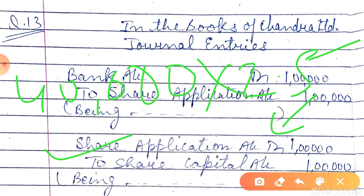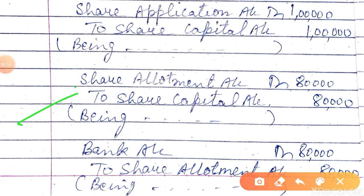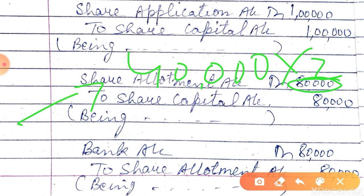We are dealing with the same entries, that's why I am solving these kinds of questions again. The next entry — tell me quickly — is share allotment account debit to share capital account. The amount ₹80,000 came from 40,000 shares into ₹2 each, so this is ₹80,000.